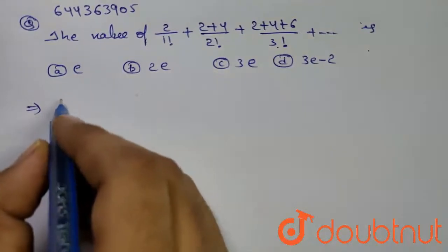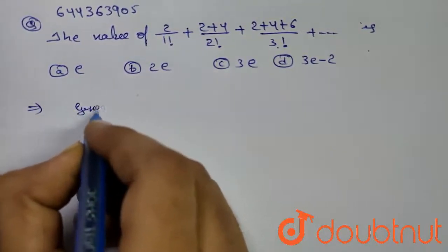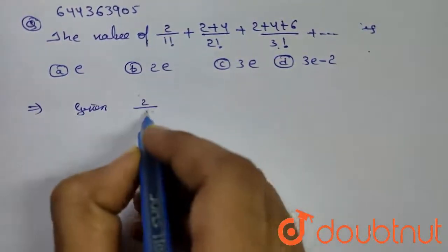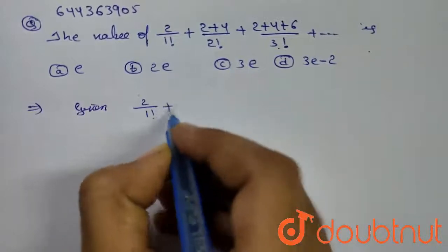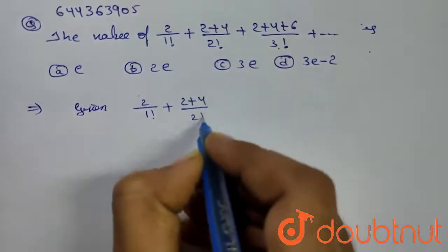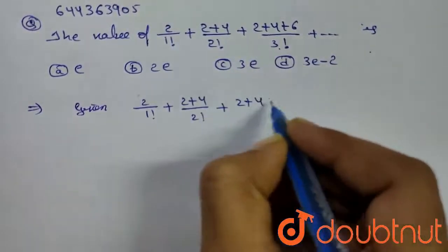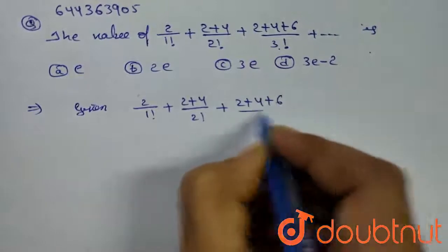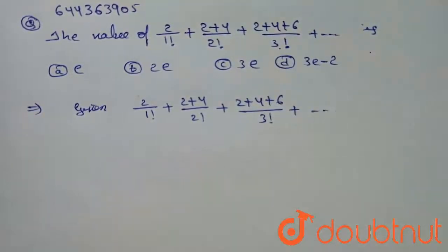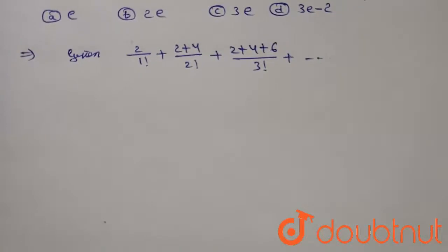Consider the given series: 2 divided by 1 factorial, plus 2 plus 4 divided by 2 factorial, plus 2 plus 4 plus 6 divided by 3 factorial. We need to find out the value of this. To find out the value of this,